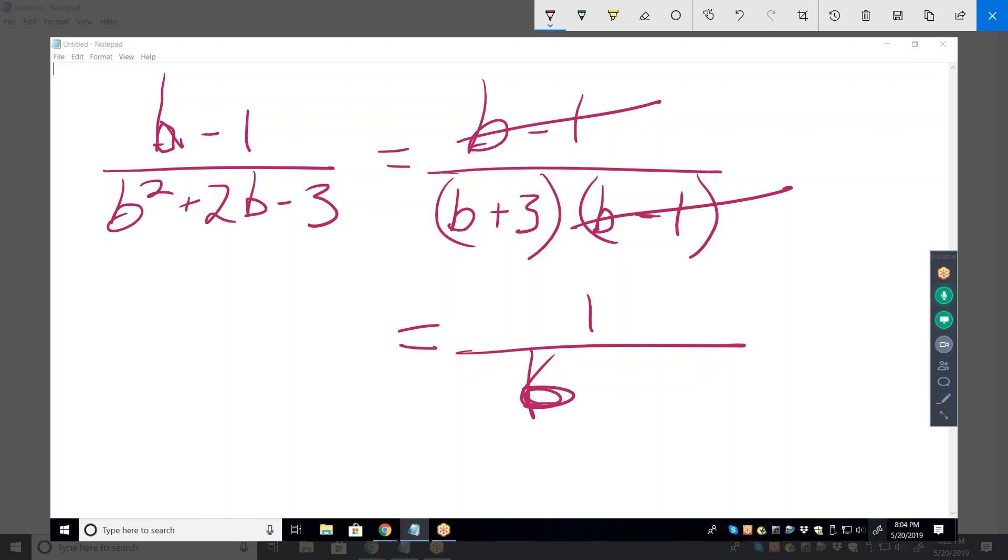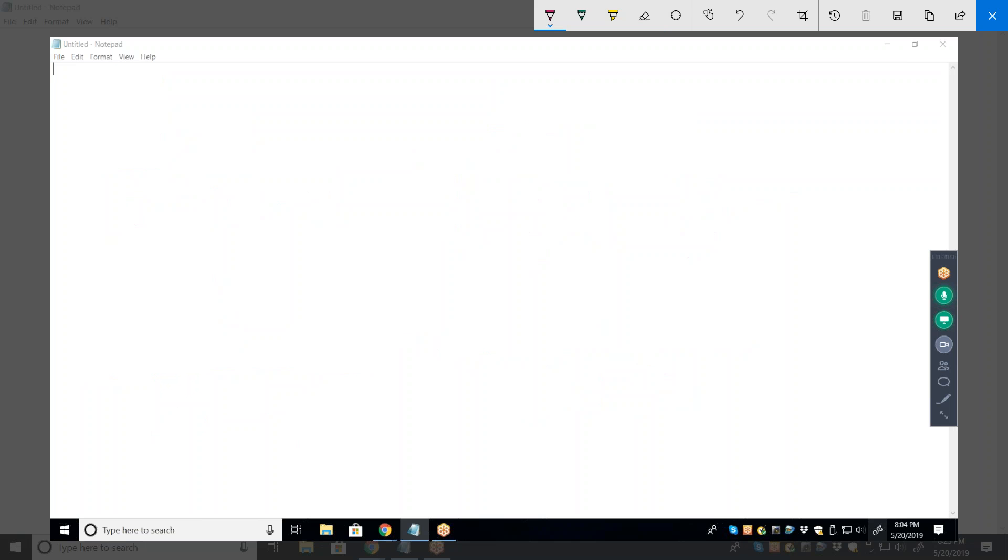So when you cancel, does, so when you're able to cancel, they, one of the things you're canceling always has to be, like, being multiplied, right? Yes. Okay. Yes. In other words, if I have this, can't cancel the B's. The only time you can cancel them is if they are a pure multiplier. Okay.